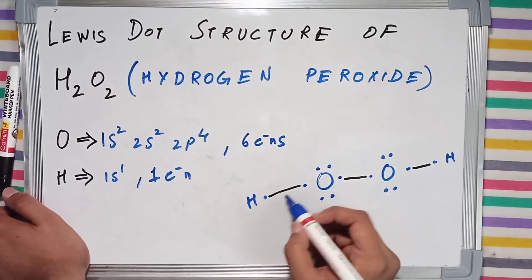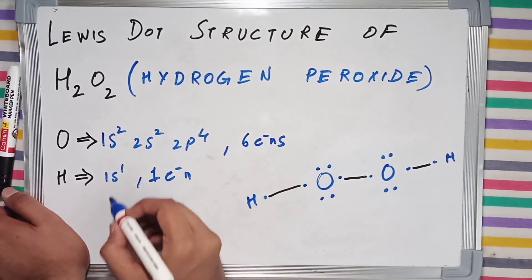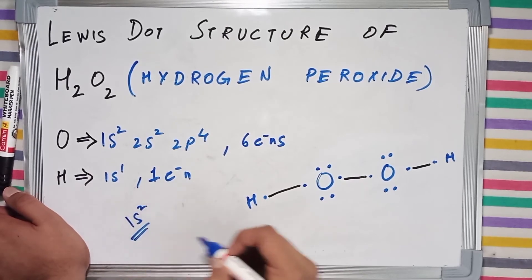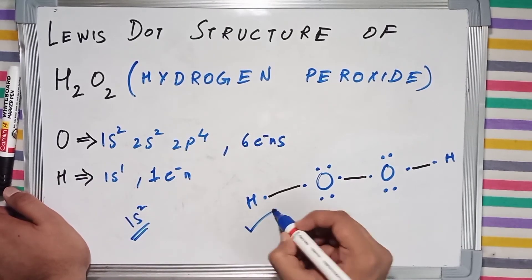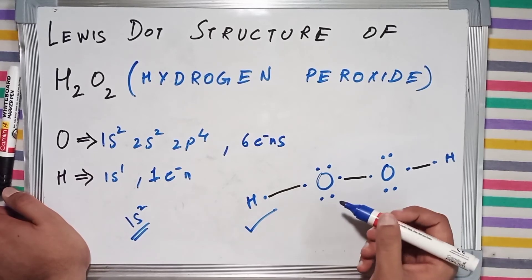Hydrogen has 2 valence electrons, so it has now gained the configuration 1s². So it has completed its duplet.